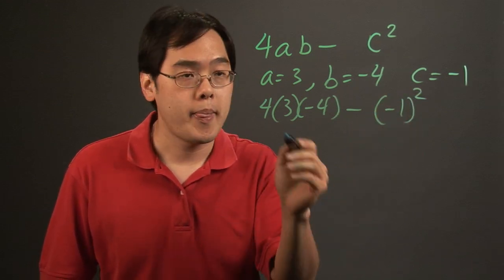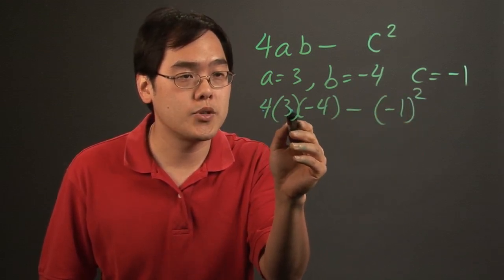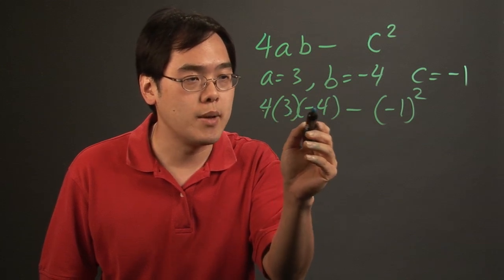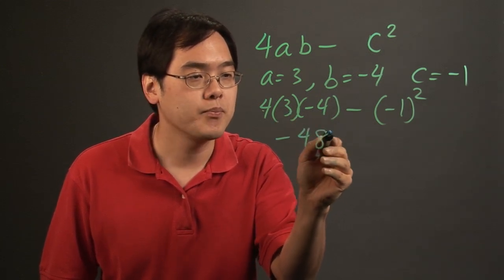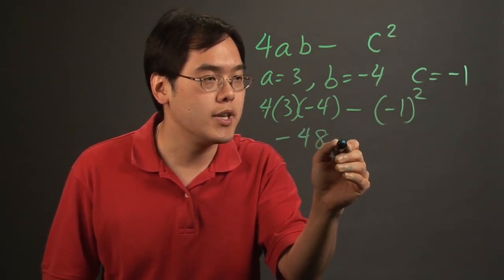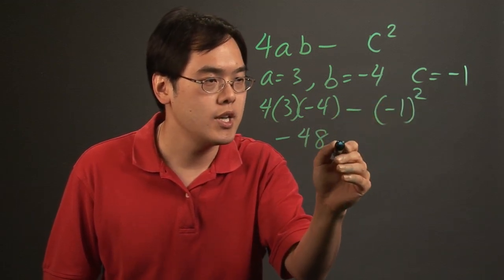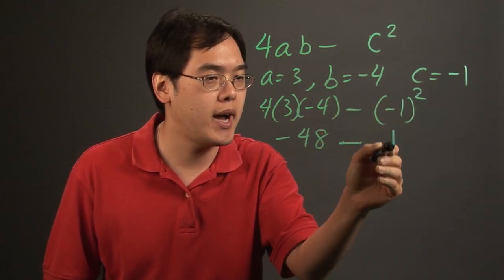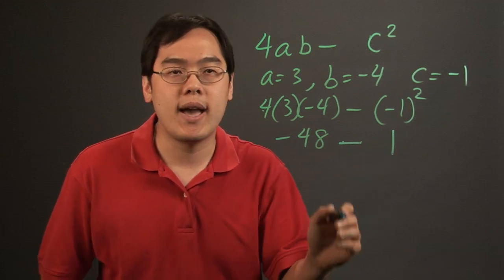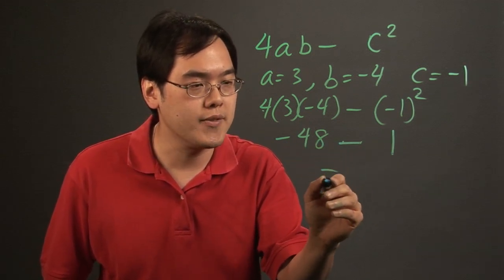So what you want to do is perform the operations. 4 times 3 gives you 12. 12 times negative 4 is negative 48. It's a little bit tricky here, but understand that exponents happen before subtraction. So negative 1 squared is positive 1. At this point you have negative 48 minus 1, which gives you negative 49.